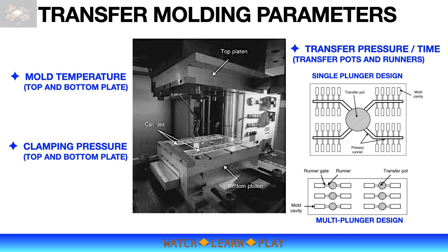During the transfer process, the molding compound undergoes a reaction and changes its viscosity until it gels. Once gelled, the molding compound is already cross-linked. Once the cavities are filled, packing pressure is applied on the mold. After approximately a couple of minutes, the molding compound is cured. Once cured, the mold will open and the molded devices will be ejected by the ejector pins.